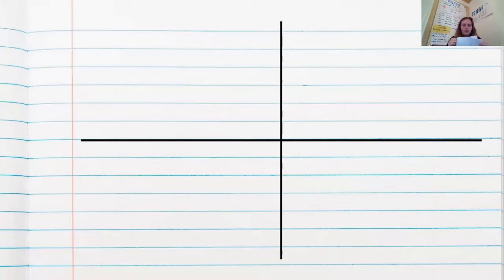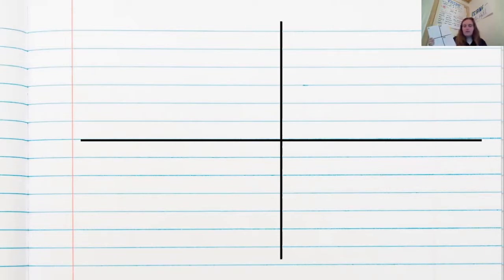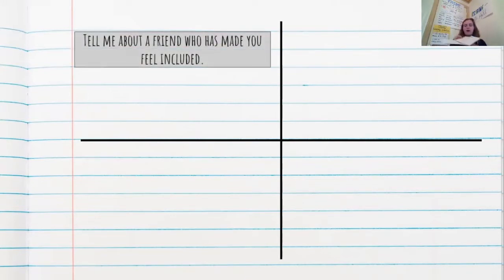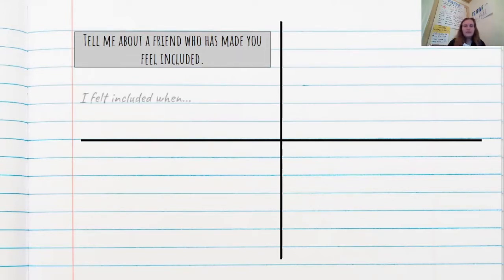So you have four different quadrants. Open your paper, draw your lines if you want to, and number your boxes one, two, three, four. We are going to be filling out this chart as we read our story. In your first box, we're going to do some pre-reading strategies and see if we can relate to our lives what Brian, the main character, is going through. Tell me about a friend who has made you feel included — write: 'I felt included when...' Go ahead and pause the video to finish that sentence.